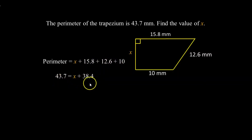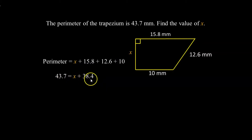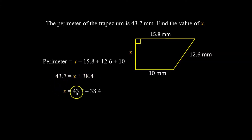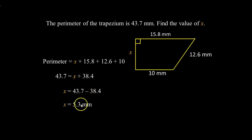This is a simple linear equation and we need to solve for X. If we take away 38.4 from both sides, we will get the value of X. So X is equal to 43.7 minus 38.4, and that is equal to 5.3 millimeters.